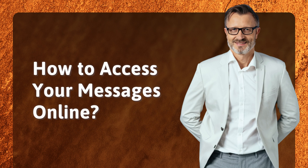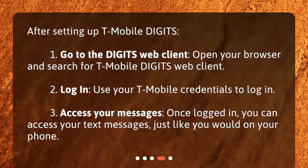How to access your messages online. After setting up T-Mobile Digits: 1. Go to the Digits web client — open your browser and search for T-Mobile Digits web client. 2. Log in — use your T-Mobile credentials to log in. 3. Access your messages — once logged in, you can access your text messages, just like you would on your phone.